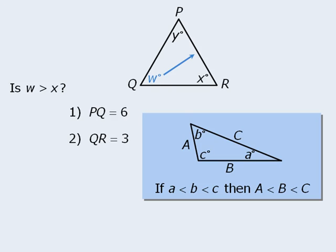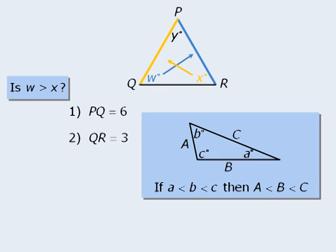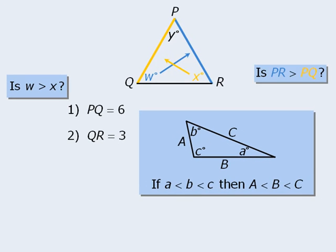So let's take the side opposite angle W and make it blue, and then we'll take the side opposite angle X and make it yellow. Since the lengths of these two colored sides correspond to angles W and X, we can take the target question, is angle W greater than angle X, and rewrite it as, is side PR, the blue side, longer than side PQ, the yellow side?